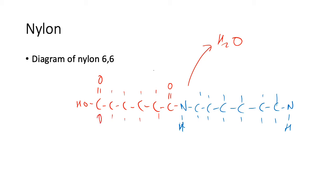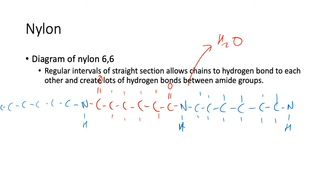Remember there's no hydrogen here because there's not enough bonds for that. We could draw another repeating unit here — carbons continuing on. The regular intervals of straight sections allow the chains to hydrogen bond to each other and create lots of hydrogen bonds between amide groups.